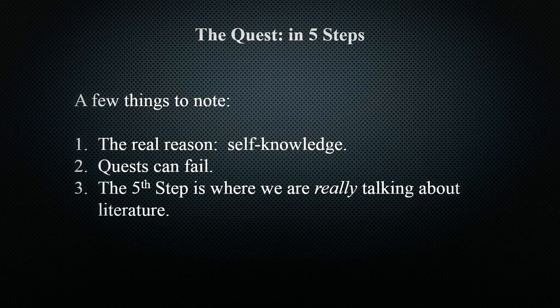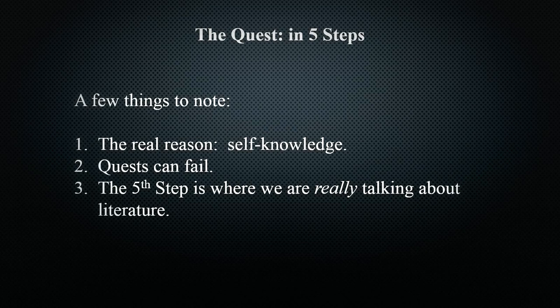The fifth step — the real reason — is when we really get to talk about literature. The first four steps in the quest are plot; they tell us what happens along the way. But when we get to that fifth step, that self-knowledge or real reason, then we're getting more in-depth into literature. That's where we get to start talking about themes, significance, symbolism, and all of that. If you want a good way to move beyond plot and discuss the significance and meaning of a story, focus on that fifth step.